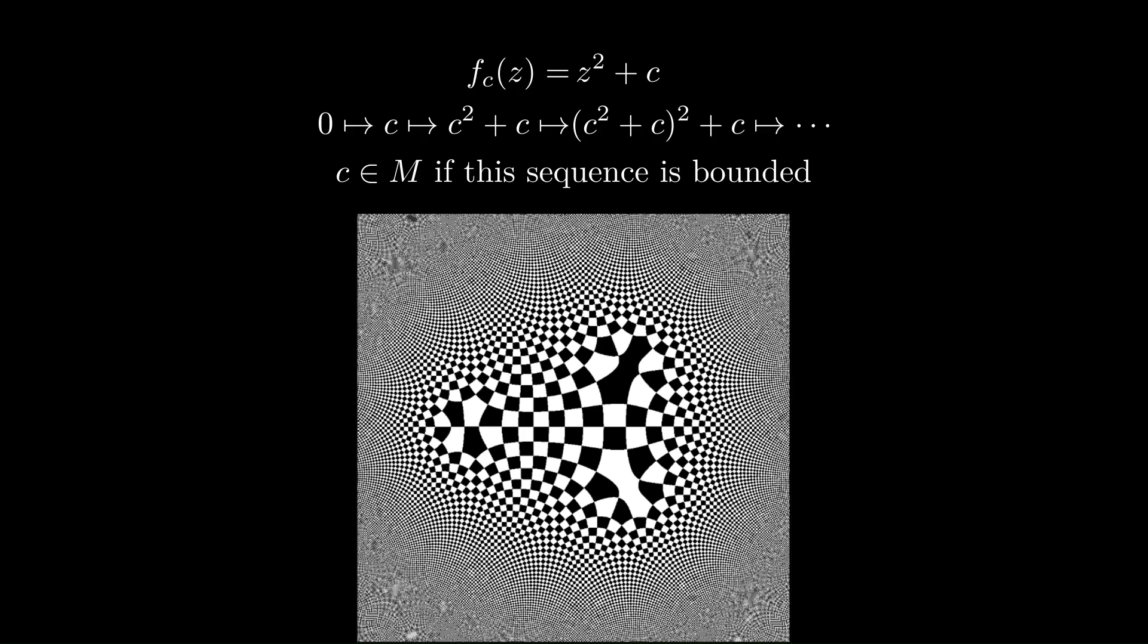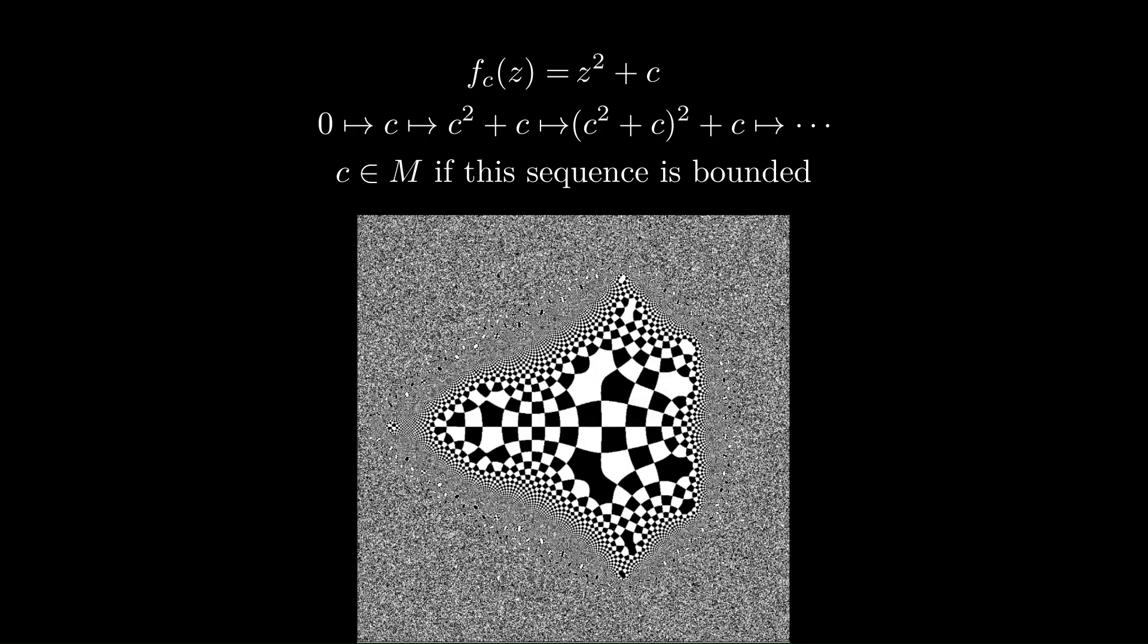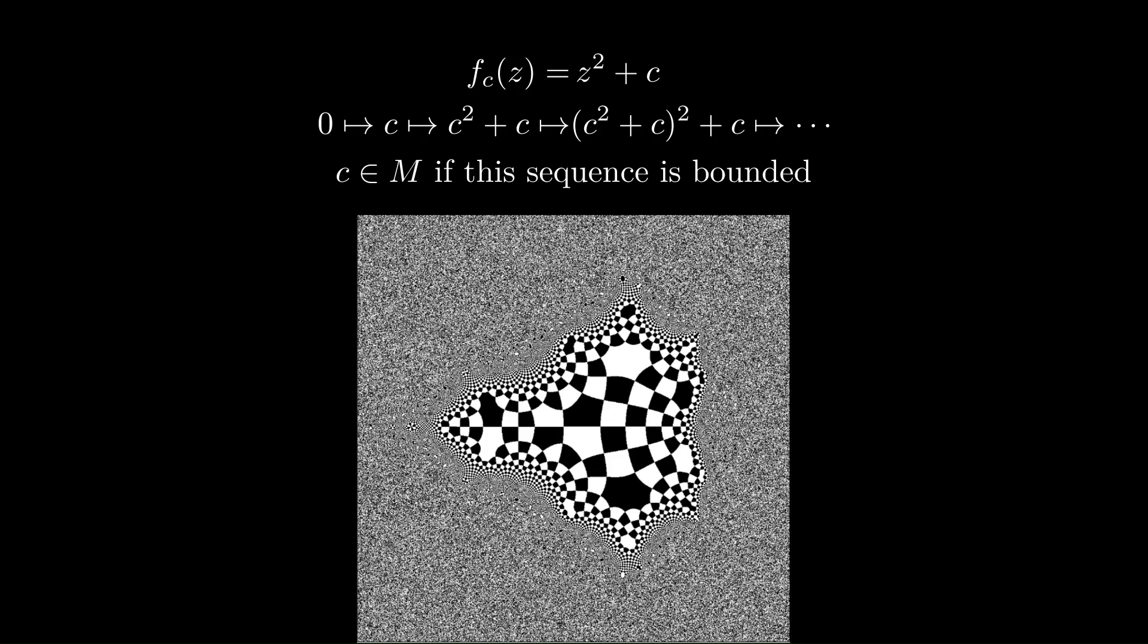And already after a few iterations, the Mandelbrot set starts to come out. And that's because for points outside the Mandelbrot set, the sequence is unbounded, so the white and black regions get closer and closer together because small deviations cause large changes in the output of the function. So we end up with the Mandelbrot set with this tiling, and outside it, it looks like a grainy black and white pattern.